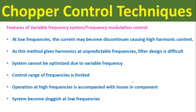Features of variable frequency system or frequency modulation control: At low frequencies the current may be discontinuous, causing high harmonic content. As this method gives harmonics at unpredictable frequencies, filter design is difficult. The system cannot be optimized due to variable frequency, and the control range of frequency is limited. Operating at high frequencies accompanies losses in components, and the system becomes sluggish at low frequencies.